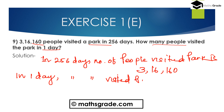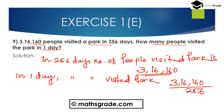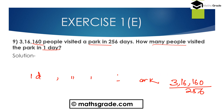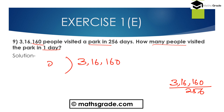The number of people who visited the park in one day is 3,16,160 divided by 256. So we have to divide 3,16,160 by 256.